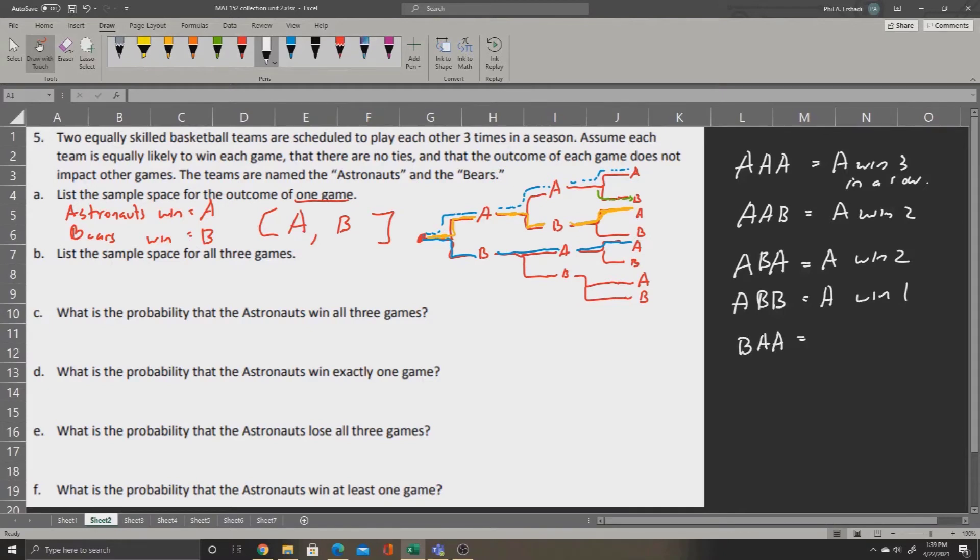Meaning, again, the Astronauts win two games because we have two As. Now we could go B, A, B also, leaving the Astronauts with only one win. And then if we change our pathway again, we can go B, B, A.